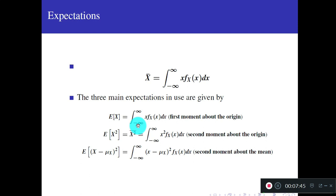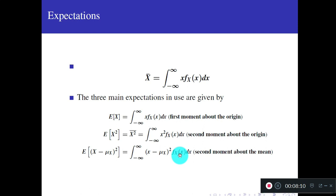All three expectation formulas are given for a continuous random variable. For a discrete random variable, instead of integration we use summation: E(X) = Σ x·f(x), E(X²) = Σ x²·f(x), and E[(X − μ_X)²] = Σ(x − μ_X)²·f(x). For the PMF of a discrete random variable, we may use the notation f_X(x) or P(x).